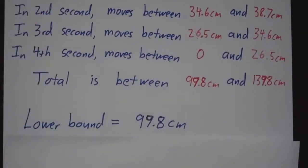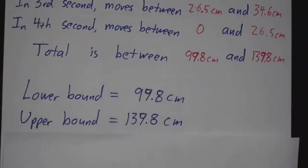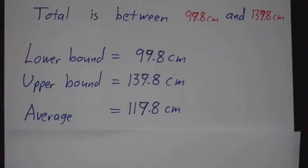We call 99.8 a lower bound. We call 139.8 an upper bound. And a good guess is the average, which is 119.8. That's it.